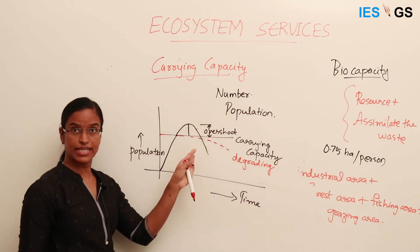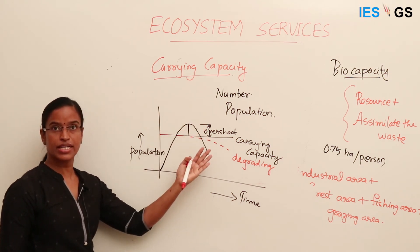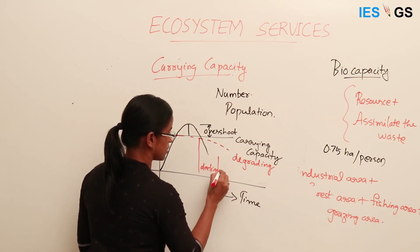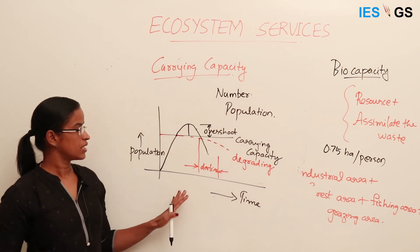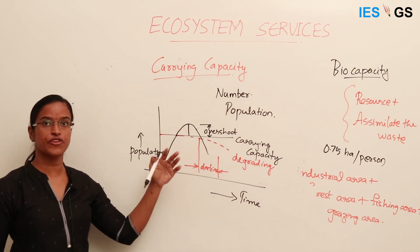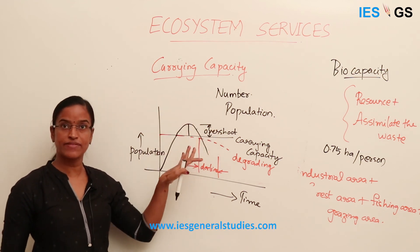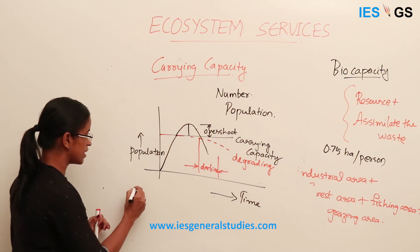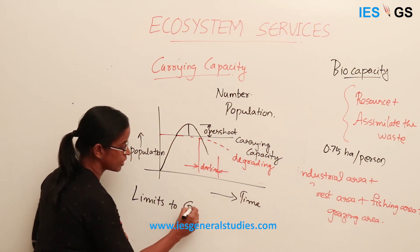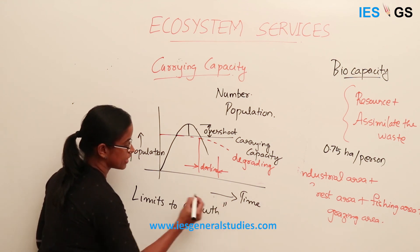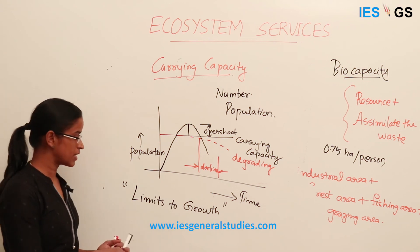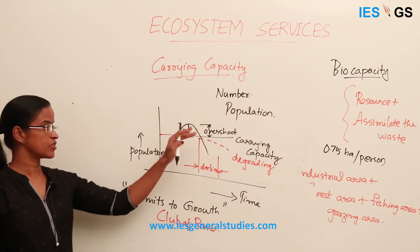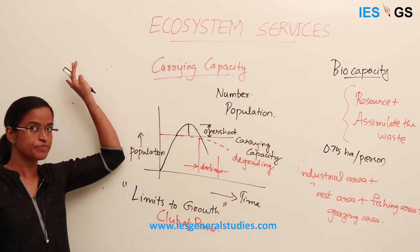When population overshoots the capacity, it then declines — the earth can't supply, so individuals in the group die off. This is a declining population. Naturalists say that if you are not taking care of the environment and overshoot capacity, automatically the population will reduce due to scarcity of resources or pollution. This concept is called limits to growth — we cannot grow as we like; there is a natural limit. This was proposed by the Club of Rome.